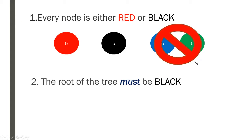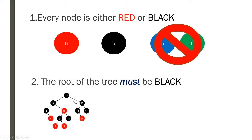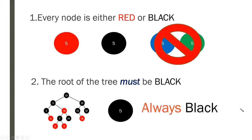The second rule states that the root of the tree must be black. Looking at this red-black tree example, the root refers to the topmost node of the tree — this is called the root, and it must always be black. This will become important later during insertion, where a red node may become the root and you would have to color-flip it. But for now, just remember the root is always black.